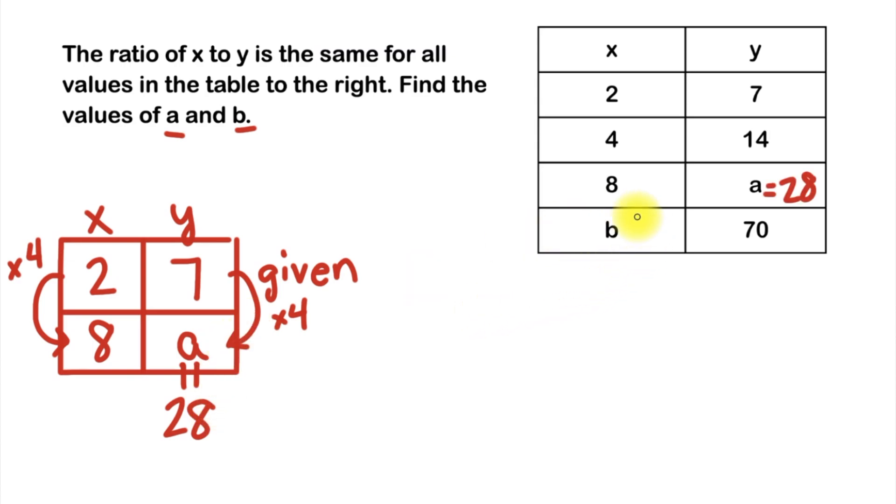So now let's take a look at b. We're trying to find out what the value of b is when our y value is 70. So let's start off the same exact way, and that was by making a table.